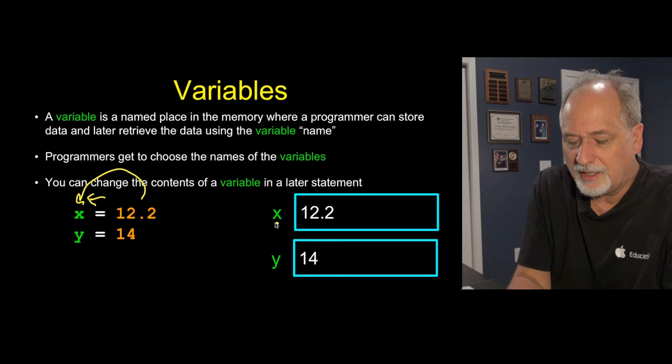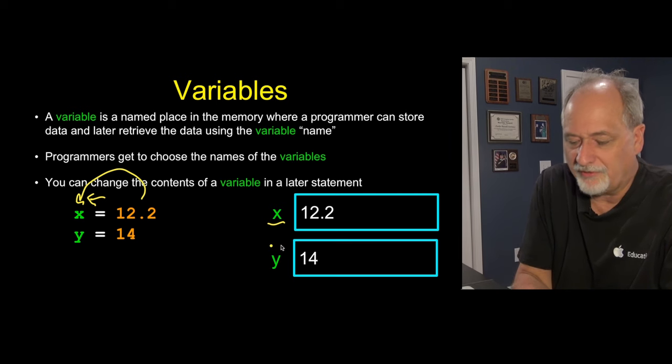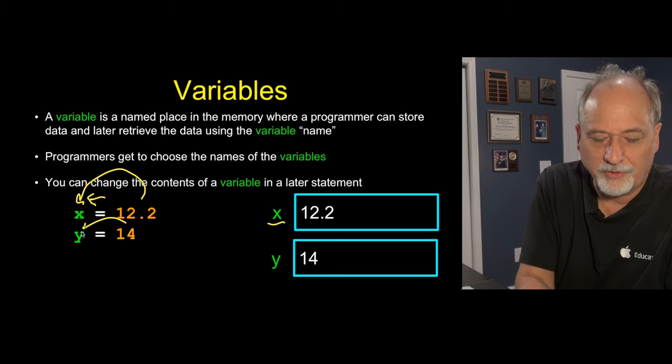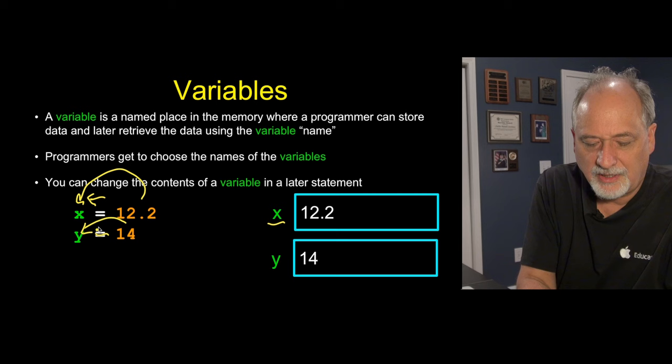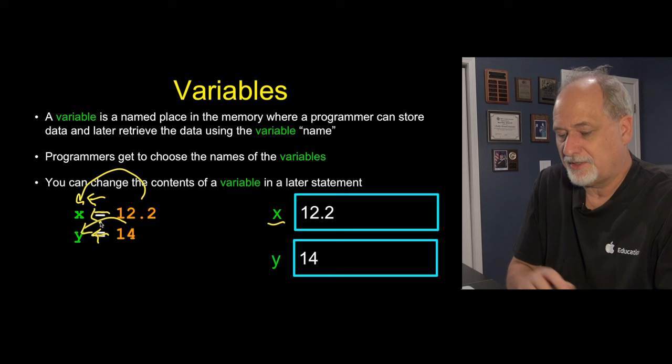Mr. Python, give it a label x, we get to choose the x. That's the variable part, we chose it, right? And then stick 12.2 in it. And then the same is true for 14. Go find another spot, name it y, and then put a 14 in there. So think of this as an arrow every time you see that equality, the assignment in an assignment statement.